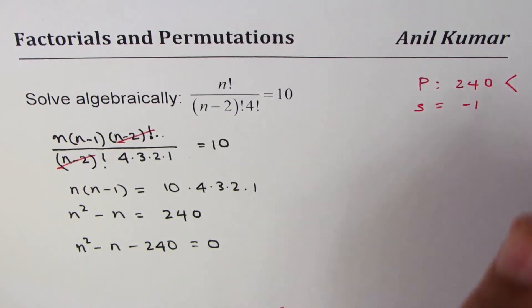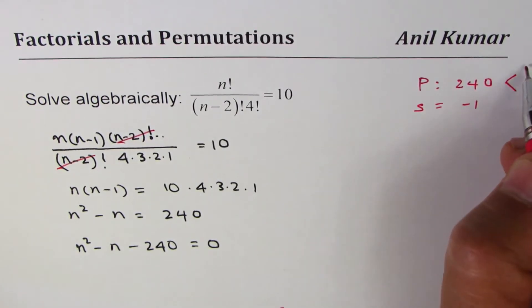Since the sum is minus 1, 16 and 15 can work for you. When you multiply them we get 240 as the product, and when you add them you get sum of minus 1.